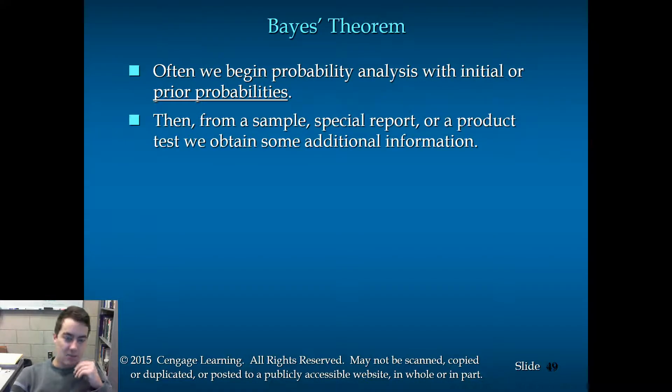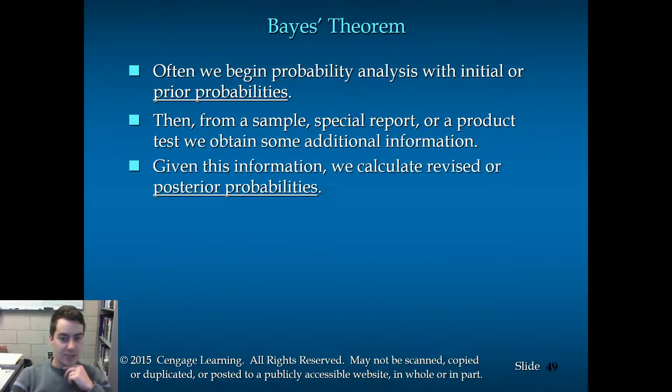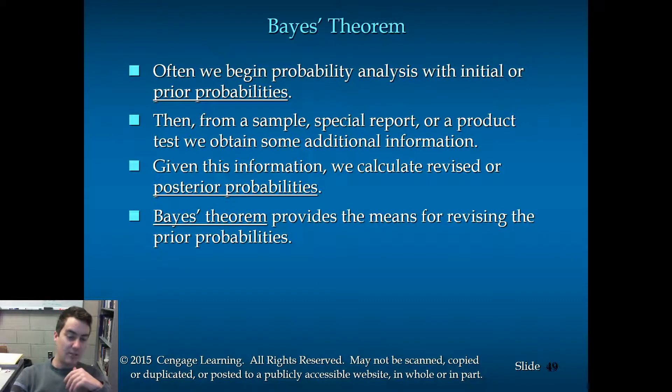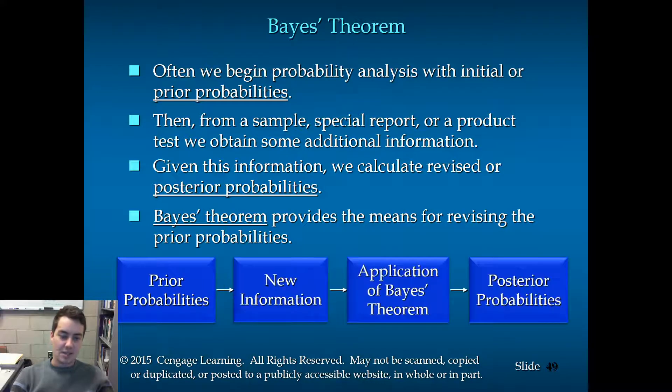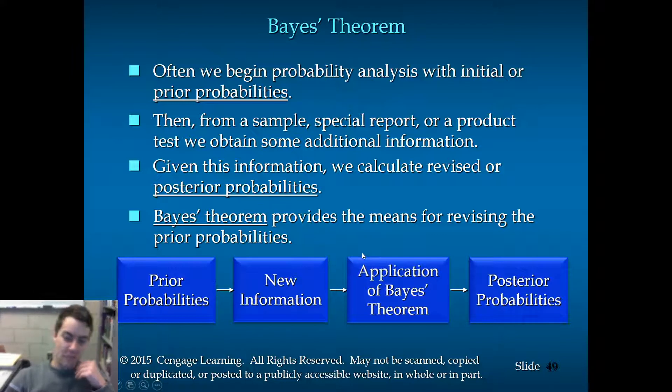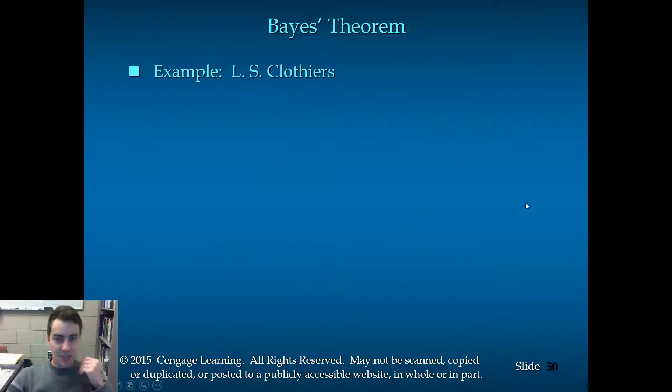So that's the idea. We start out with prior probabilities, then from some kind of sample, report, test, et cetera, we obtain additional information, and then we calculate revised or posterior probabilities. Bayes' Theorem provides the means for revising this prior probability, and so these four bullet points are sort of a flowchart. We start out with prior probabilities, then we get a sample, new information, we go to posterior probabilities through Bayes' Theorem.